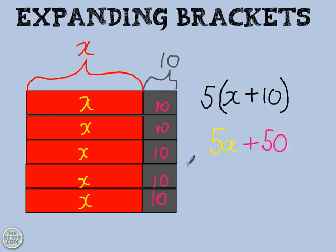So there's two ways to look at this, this whole diagram. You can look at it as 5 lots of x plus 10, or you can look at it as 5x plus 50. And I can go from one to the other. I can switch from this way of writing it to this way of writing it very easily. And that's called expanding brackets when I do that.